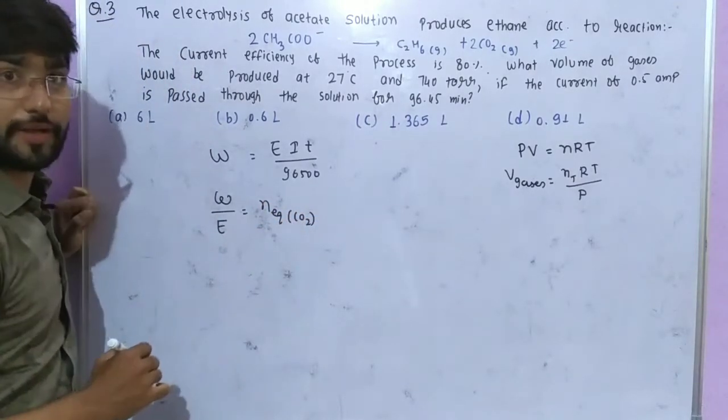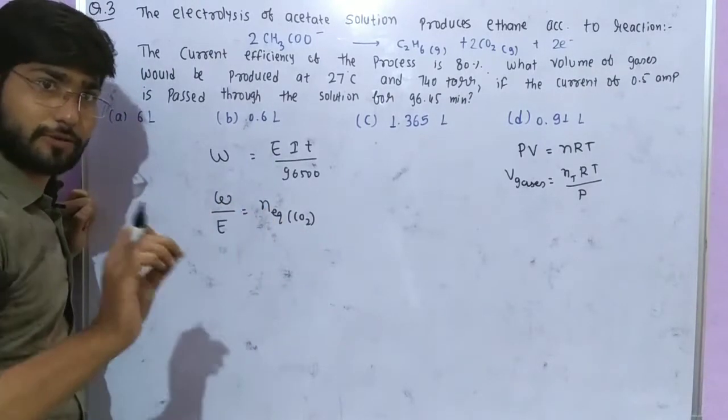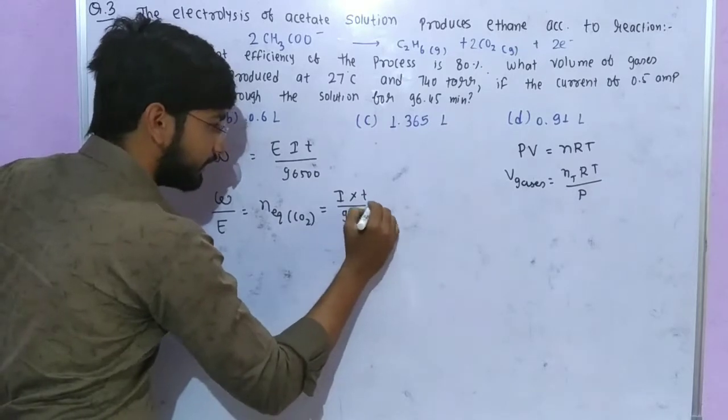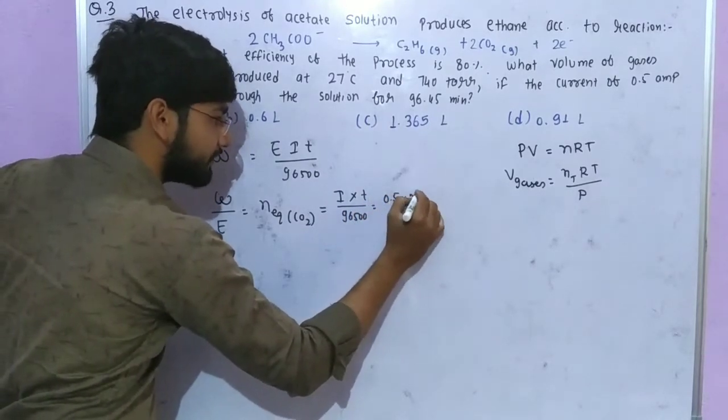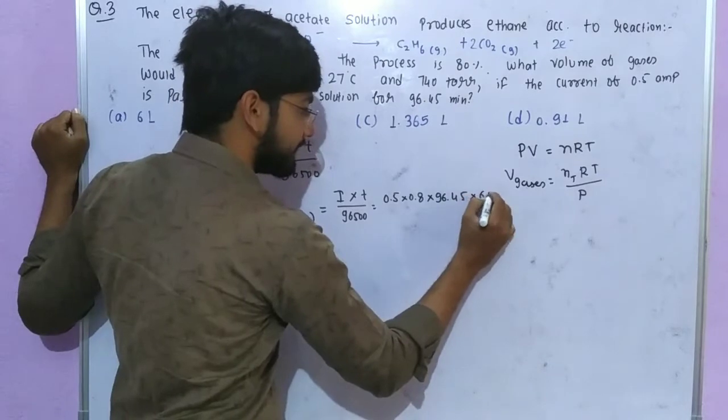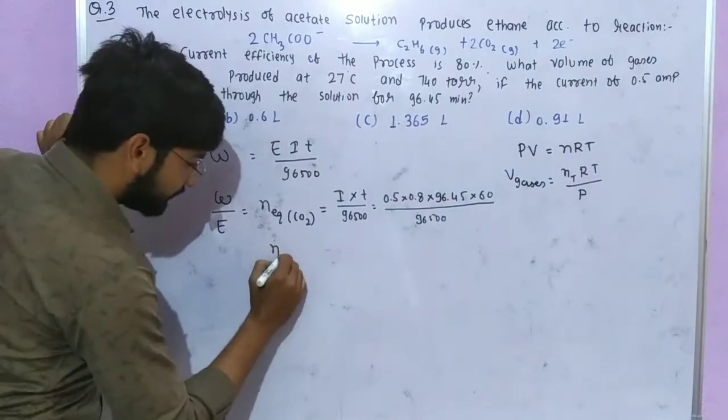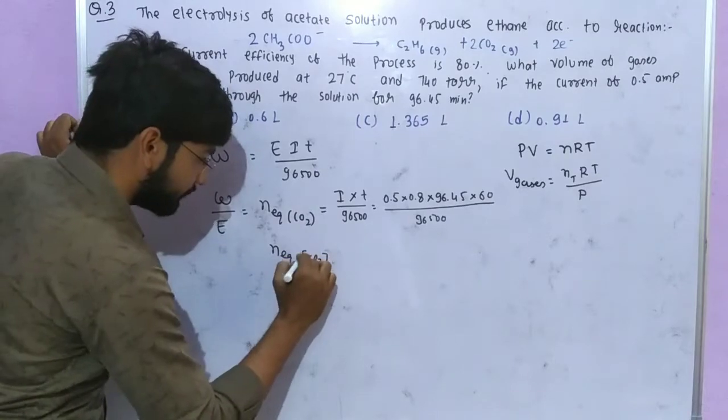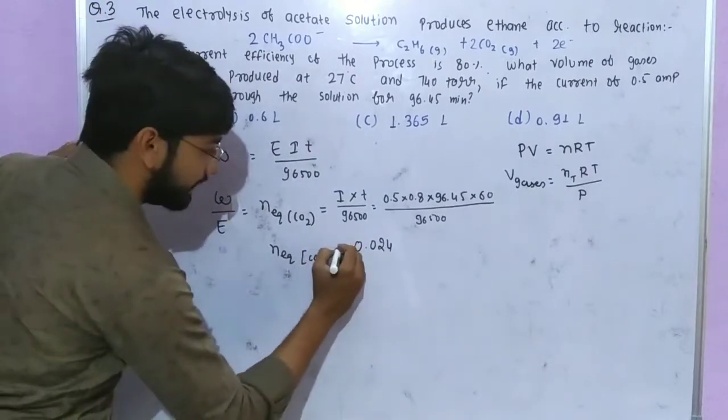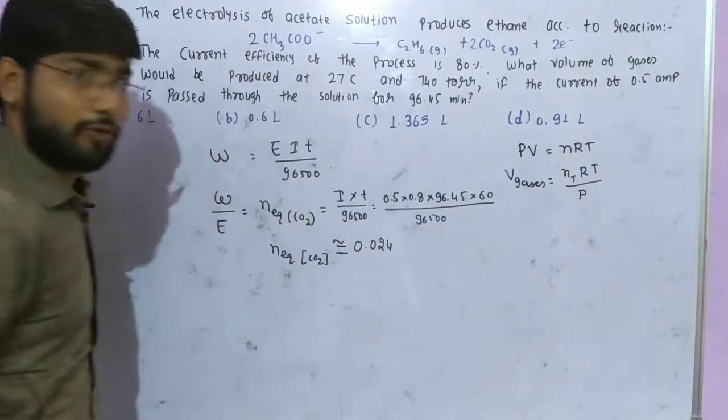Number of equivalents of CO2 equals current times time divided by 96500. Current is 0.5 ampere with 80% efficiency, so 0.8 times 0.5, multiplied by time which is 96.45 minutes converted to seconds times 60, divided by 96500. This gives number of equivalents of CO2 approximately 0.024.